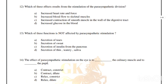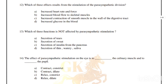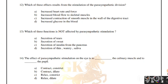Which of these effects results from stimulation of the parasympathetic division? Options: increased heart rate and force; increased blood flow to skeletal muscles; increased contraction of smooth muscles in the wall of the digestive tract. Option C is the right answer.